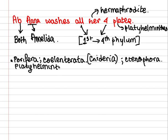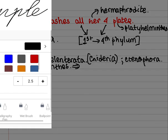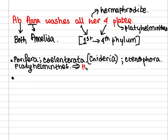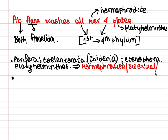Platyhelminthes live within the body of hosts, so they have hooks and suckers — just extra information. Both these and all the first four phylums show hermaphrodite condition, also called bisexual or monoecious.